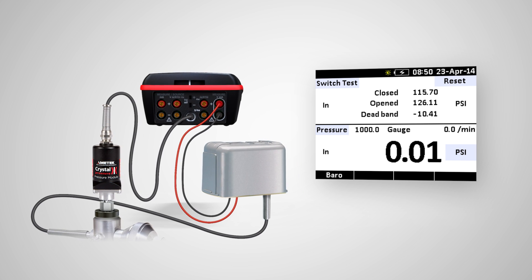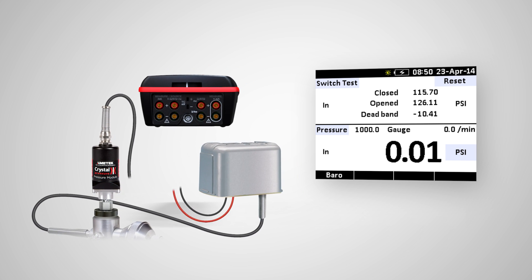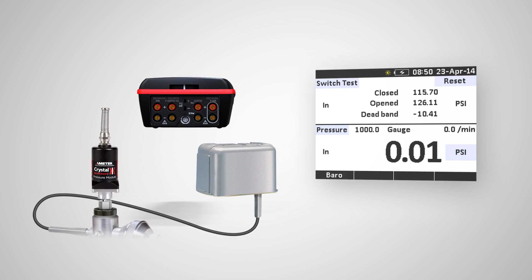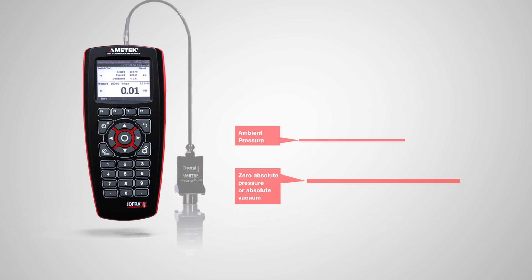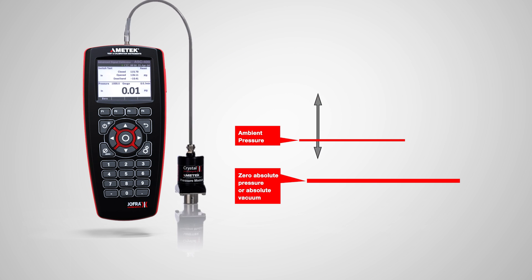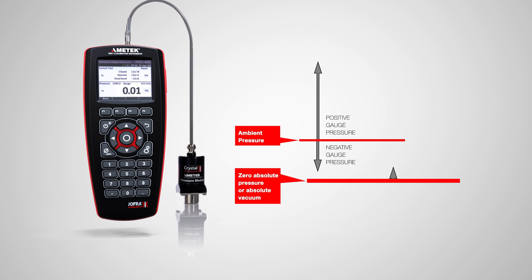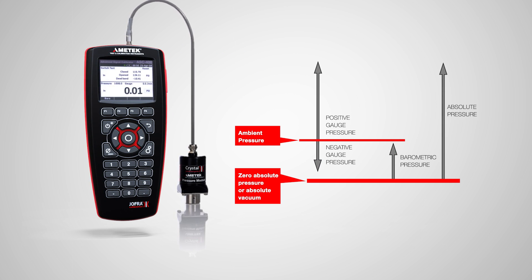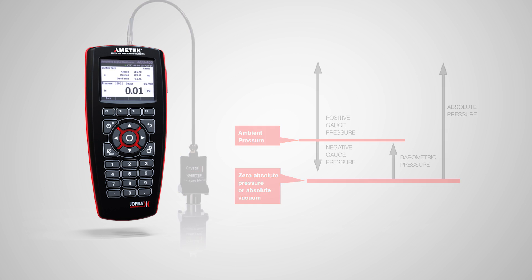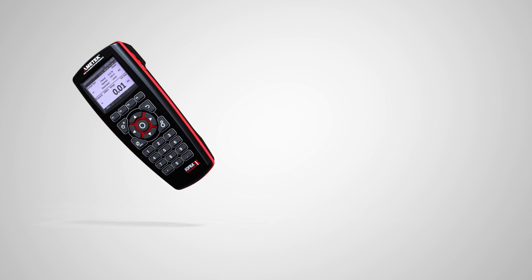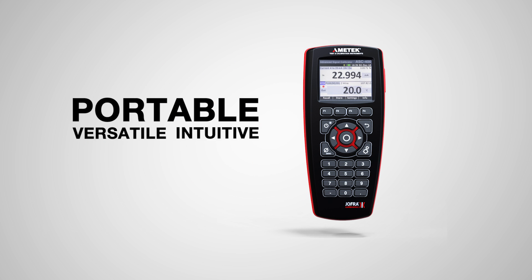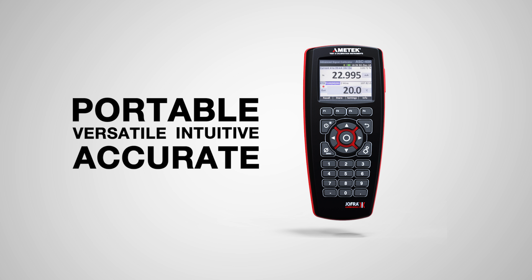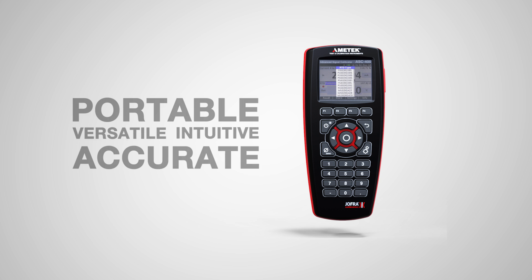The leak rate is automatically displayed to avoid errors during pressure tests. Connect a crystal pressure module to measure gauge pressure or switch to barometric and absolute pressure. This is what we call advanced simplicity. Unlock the potential of your multi-calibrator.